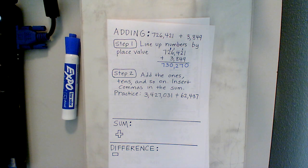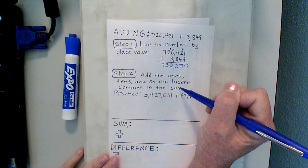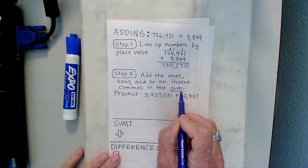Step two: we added the ones, the tens, and all the way down. We inserted the commas in the sum. Underline the word sum.